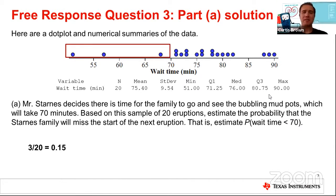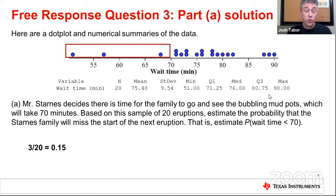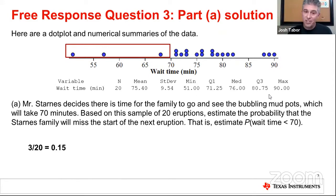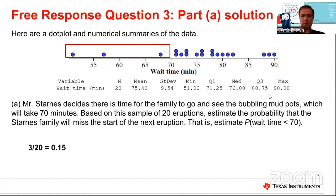A question: what if a student only wrote three over 20 and did not give the decimal response? Both in the past and certainly for this year, three out of 20 would be a full credit answer — it's the 0.15 alone that would be questionable. It's always been the case that the fraction three over 20 earns full credit, and students don't even need to reduce a fraction like four over 20 to one over five — in fact, it's preferred they don't reduce it to avoid arithmetic errors.